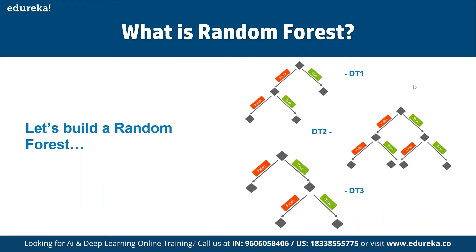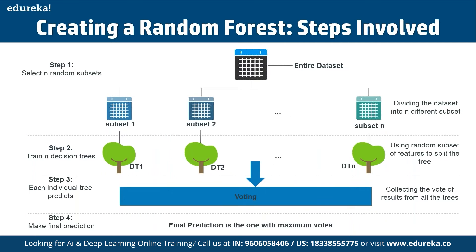To build a complete random forest, we combine multiple decision trees. First, we create decision trees using bootstrap data sets. Since we are not using the entire data set, we divide it into multiple subsets — n different subsets. For each subset, we build a decision tree, using a random subset of features to grow the tree. Then each individual tree makes a prediction, we collect votes from all decision trees, and the final prediction is the class with the maximum number of votes.